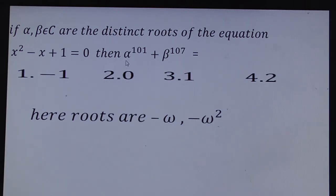Substitute here: this is (-ω)^101 and β as (-ω²)^107. So here apply the properties of omega: ω³ = 1 and 1 + ω + ω² = 0. So diminish the power by using 3.